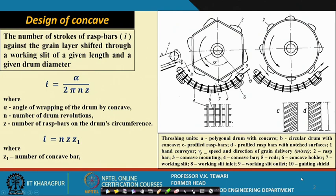Design of the concave — the different components we consider are: the cylinder, the concave, the entry point, the exit point, the size of the concave, the size of the cylinder, the speed at which it works, and the amount of power which is required. Let us have a look at these aspects.